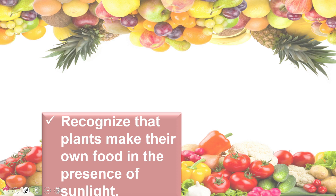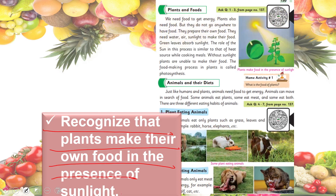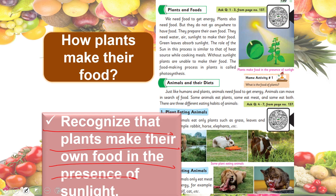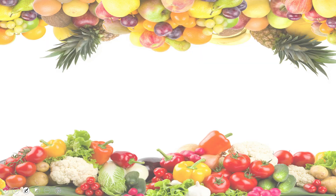In the first lecture, students were able to recognize that plants make their own food in the presence of sunlight. Animals also need energy, and plants gain that energy by making their own food. The process is called photosynthesis. Plants make their food in the presence of sunlight, air, and water — and this process is called photosynthesis.